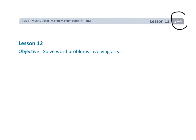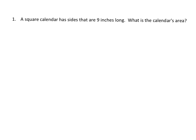This is Grade 3 Module 4 Lesson 12. In this video we're going to be solving word problems involving area. The first question is: a square calendar has sides that are 9 inches long — what is the calendar's area?